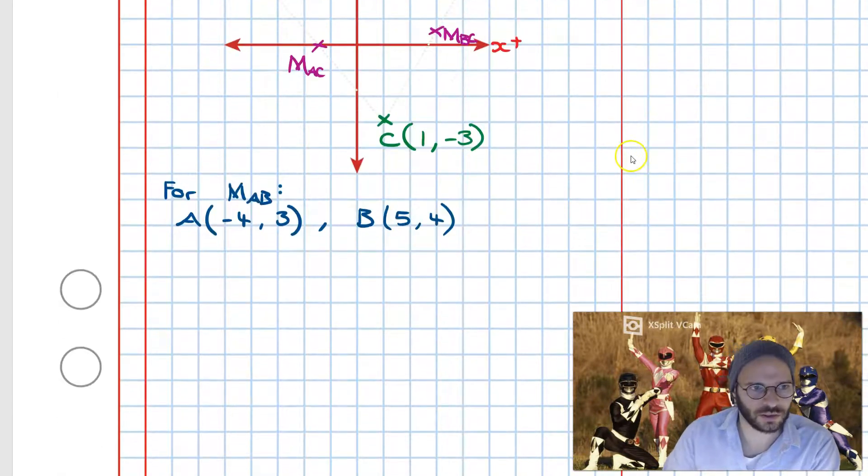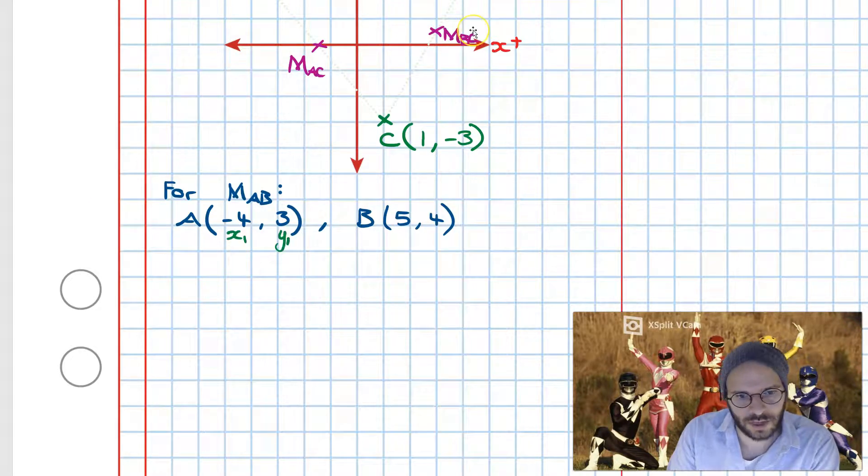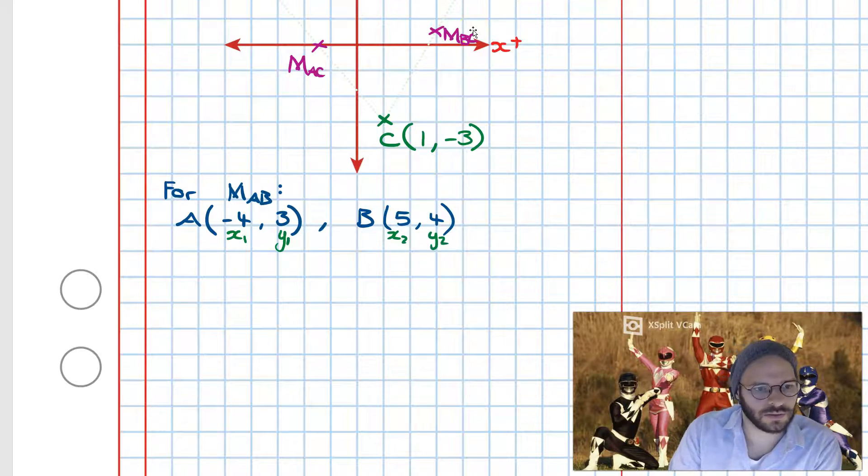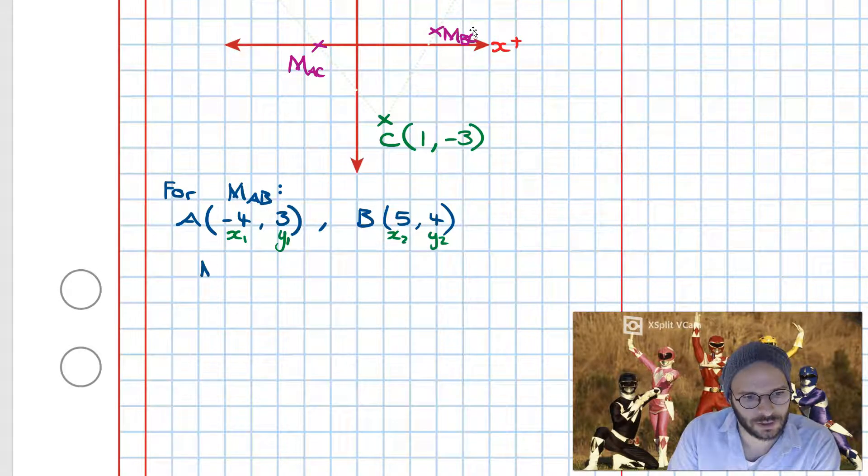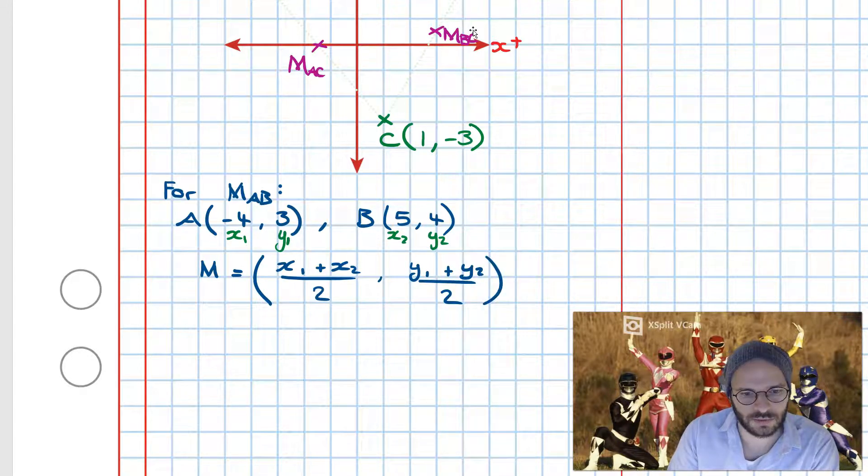Next step is I'm going to define which coordinate I want to be x1 and y1, and then for x2 and y2. After that, I write out my midpoint formula, so M is equal to x1 plus x2—so the average of the x coordinates—and the average of the y coordinates. We never mix x and y coordinates together using this formula.